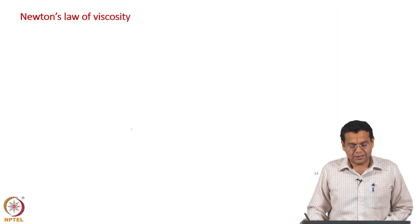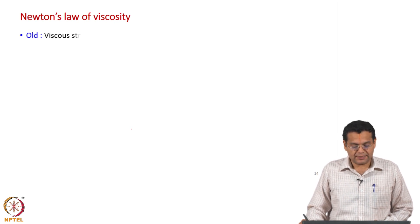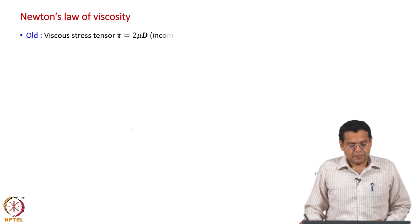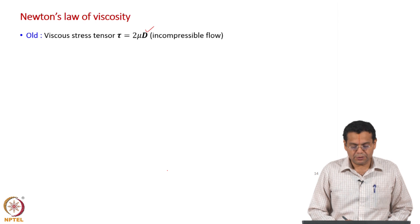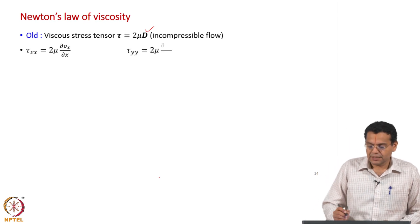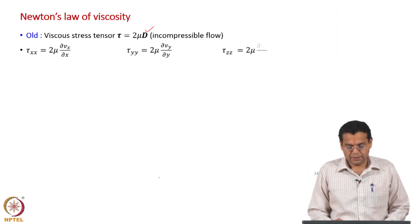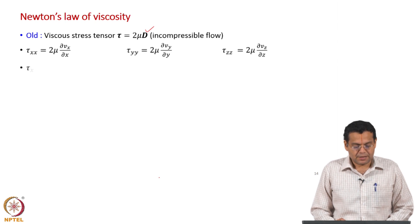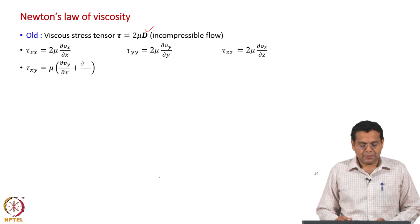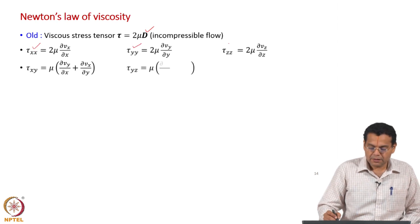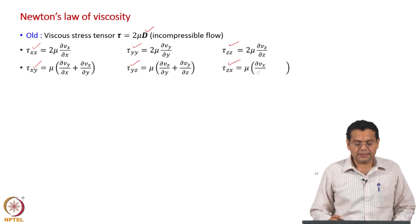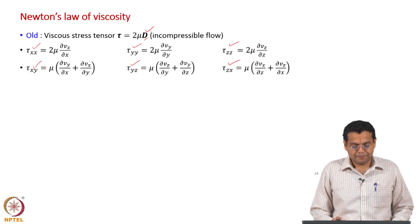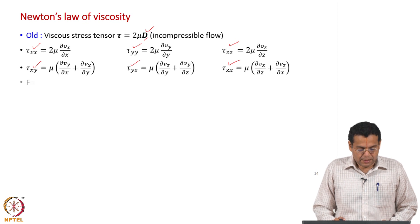Let us write Newton's law of viscosity first using the old fluid mechanics sign convention. The viscous stress tensor tau is related to the strain rate tensor by the equation tau equals 2 mu d. In terms of components, these equations cover the normal stresses and the shear stresses. The left-hand side has components of the viscous stress tensor, and the right-hand side has components of the strain rate tensor.